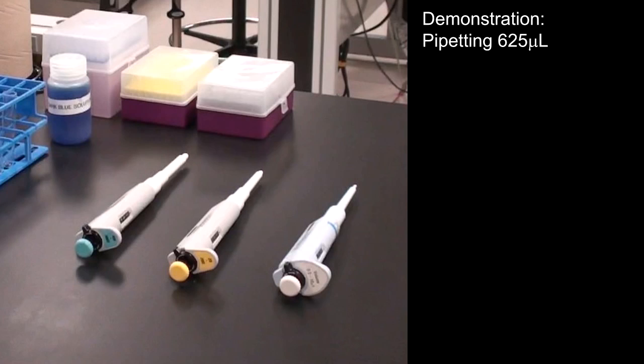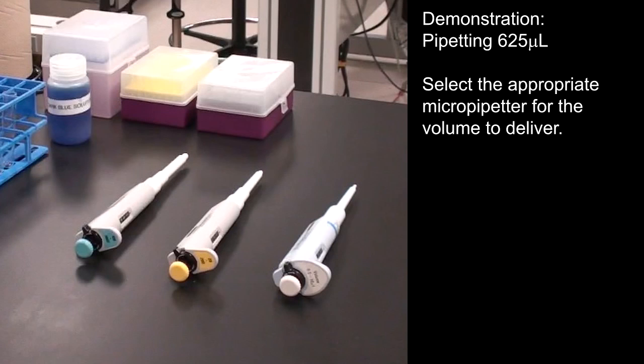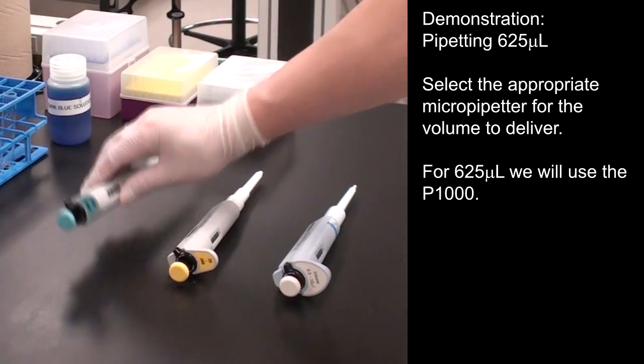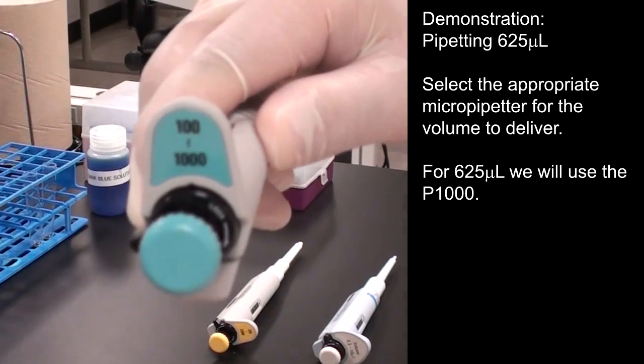We will demonstrate pipetting 625 microliters. Select the appropriate micropipettor for the volume to deliver. For 625 microliters, we will use the P1000.